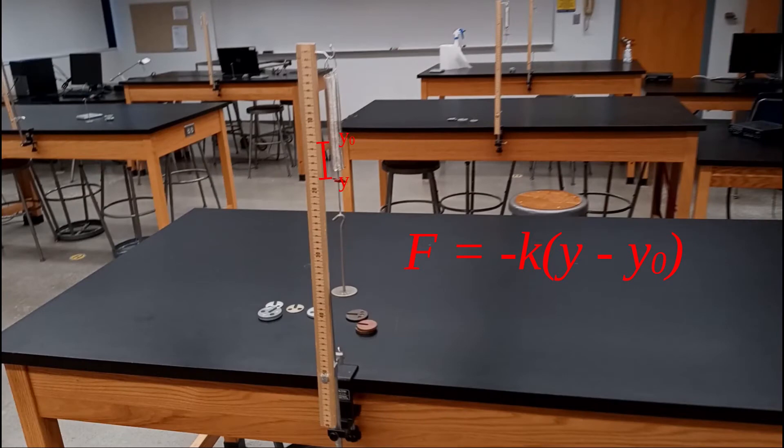To determine the spring constant, we can use the spring force equation. By attaching different amounts of mass to the spring and therefore applying different forces, we can measure the resulting displacement and determine the spring constant.